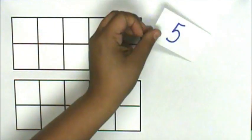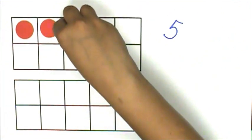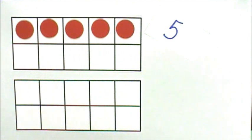First turn over a card. The number is five. Next let's represent that number on a ten-frame. I know that when one row is completely full it represents five.